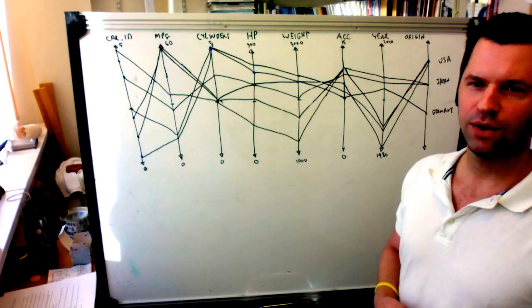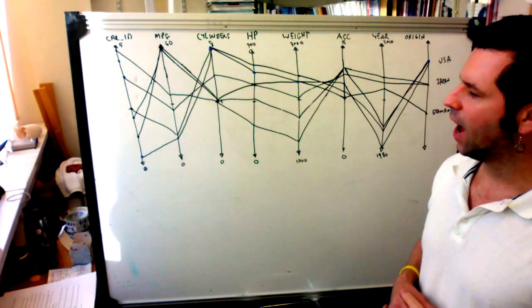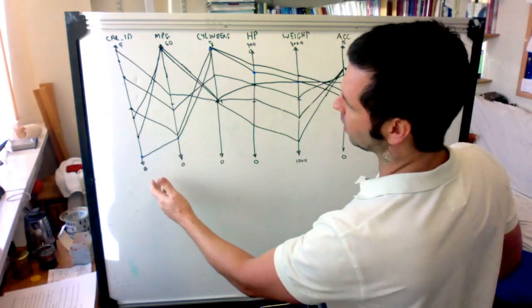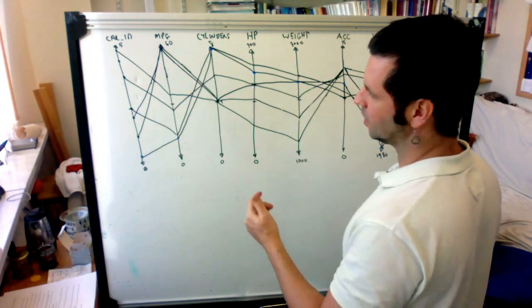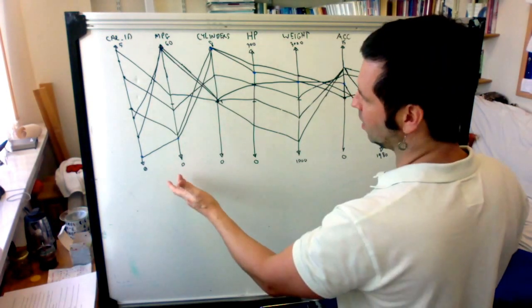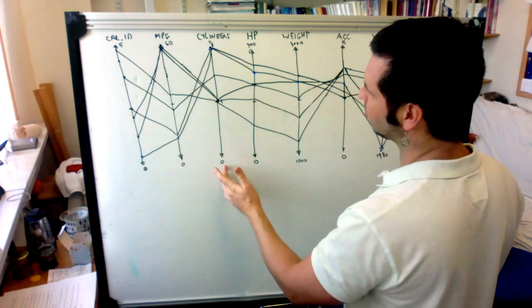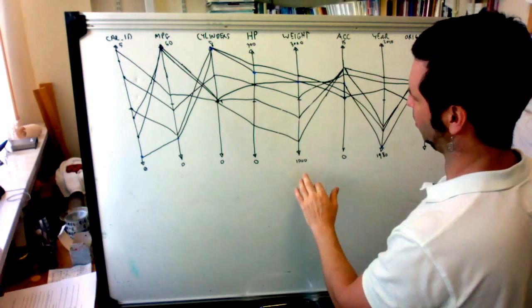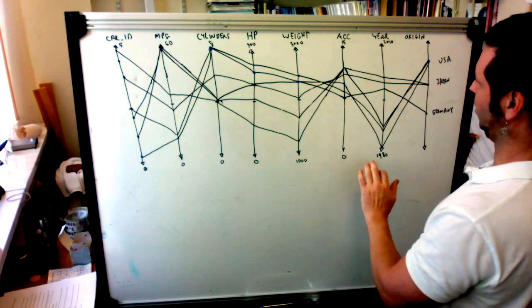And each car attribute gets its own axis in the parallel coordinates. So here's an axis for the ID of the car, the miles per gallon, the number of cylinders, the horsepower, weight, acceleration, year and origin.